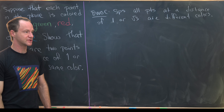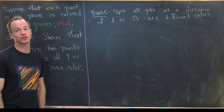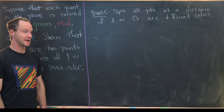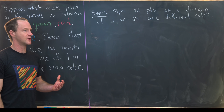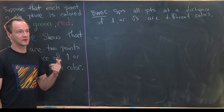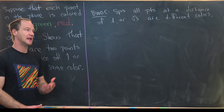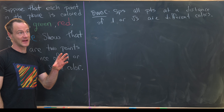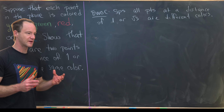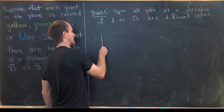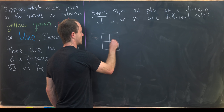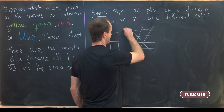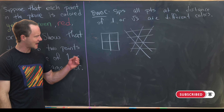We construct a coloring of the plane that will contradict this statement. A standard approach is to think about all tilings of the plane by regular polygons. It's well known that only squares, triangles, and hexagons tile the plane regularly. The tiling by triangles and hexagons is essentially the same because every hexagon can be broken into equilateral triangles, so we focus on tilings built from squares or equilateral triangles.